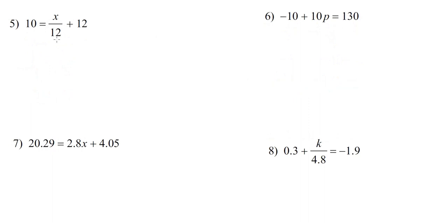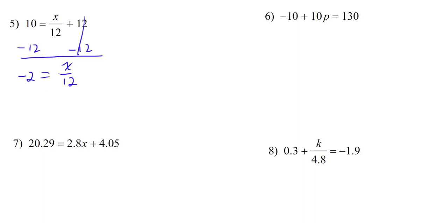Number 5: 10 equals x over 12 plus 12. First step, undo addition or subtraction. So we're going to undo this plus 12 by subtracting 12 from both sides. On the right, the 12s cancel out, leaving us with x over 12. And on the left, 10 minus 12 — different signs subtract, keep the sign of the bigger number — this is going to be negative 2. Then second step, undo multiplication or division. x is being divided by 12, so we're going to multiply both sides by 12. On the right, the 12s cancel out, leaving us with x. And on the left, 12 times negative 2 is negative 24.